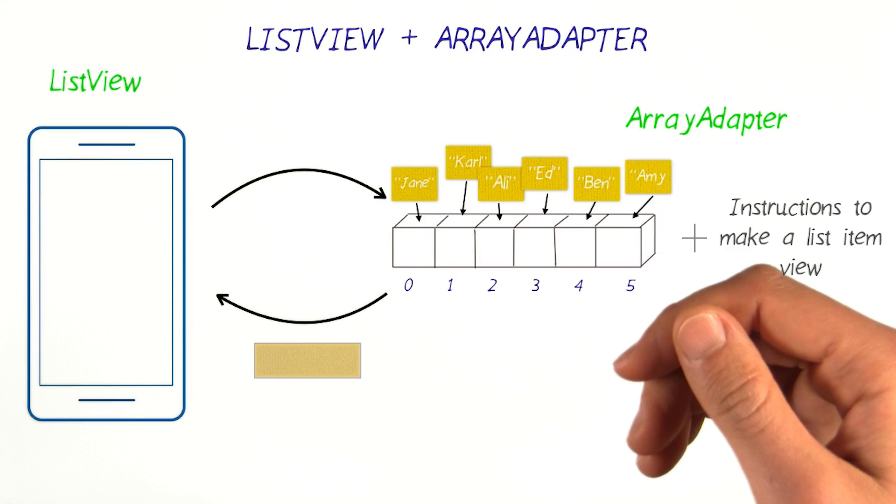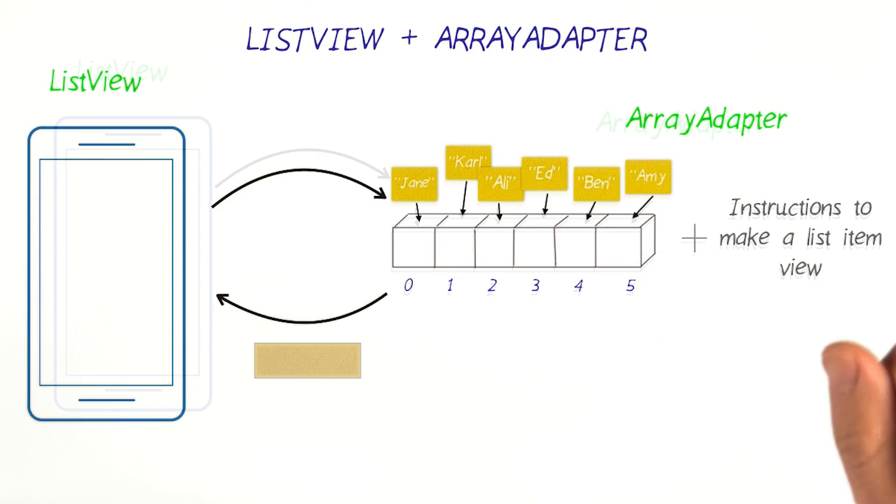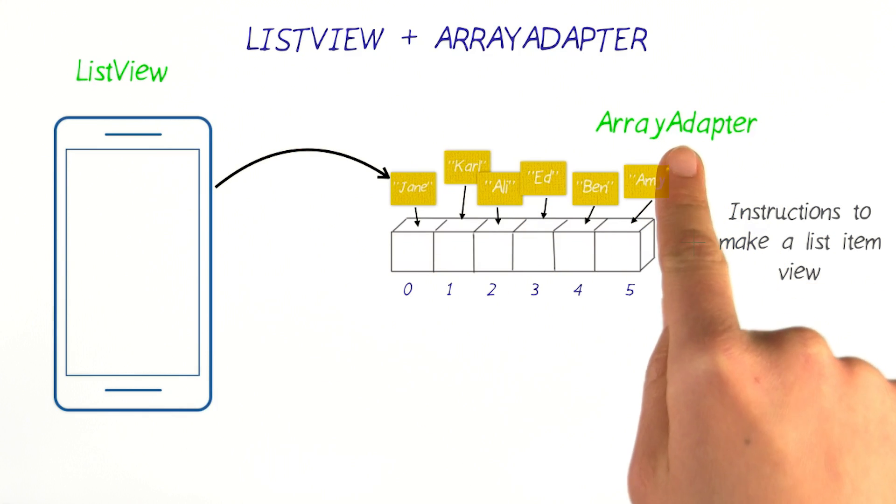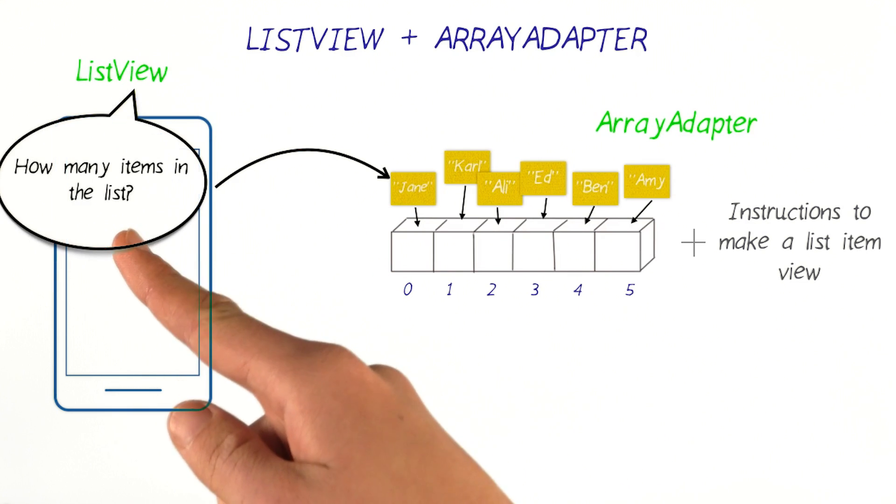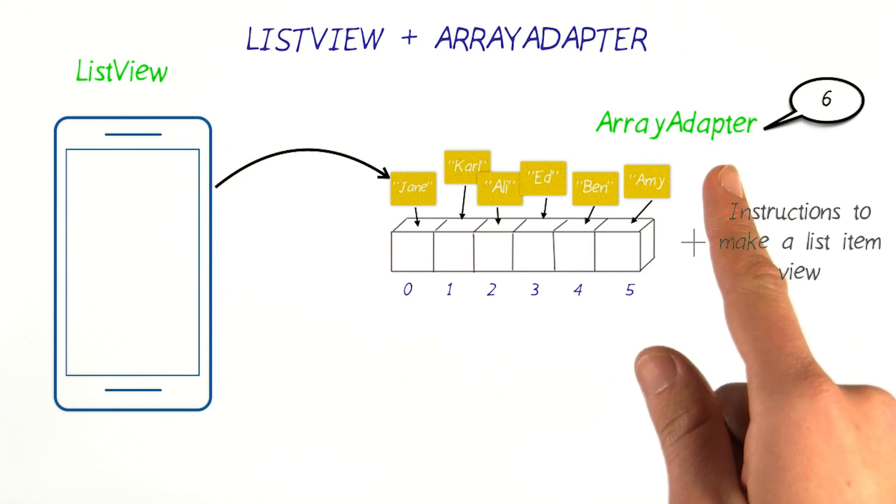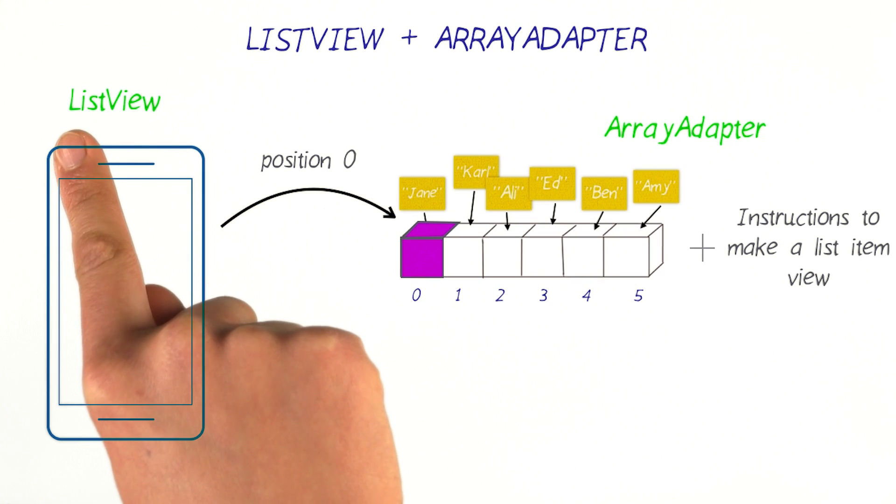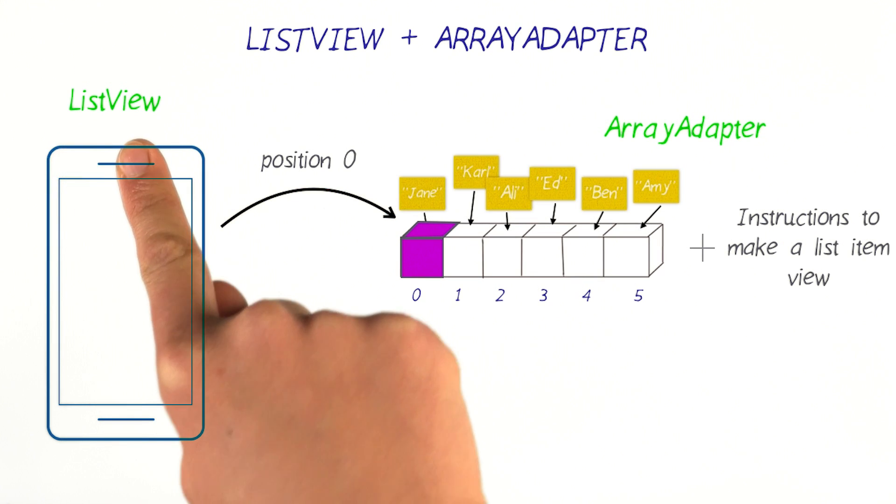Let's take a look at the details of how all this works. When you first associate an adapter to a list view, the list view will ask how many items it should expect to display. And the array adapter knows this information.